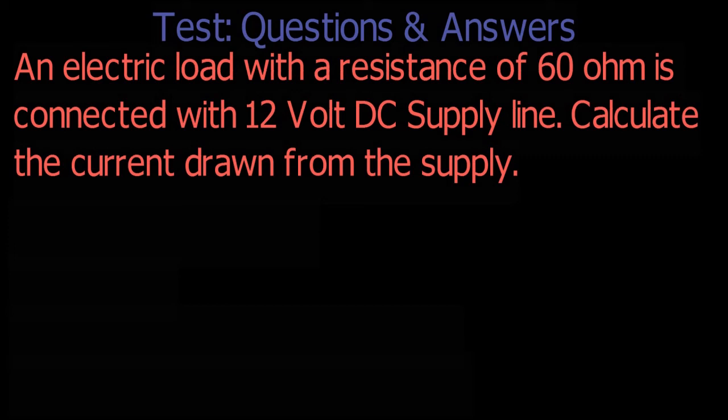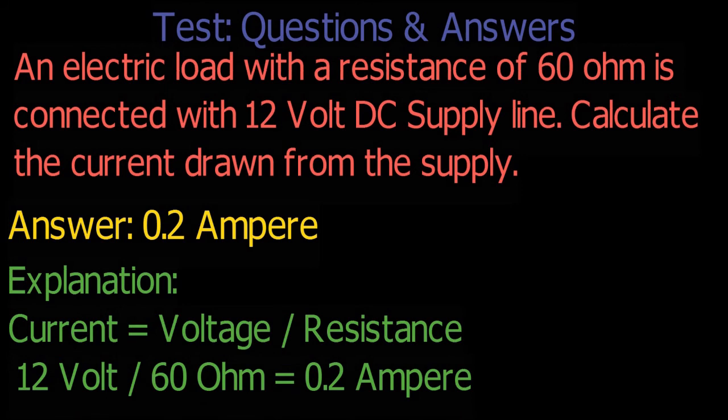The answer is 0.2 ampere. Explanation: As per Ohm's law, current equals voltage divided by resistance. So 12 volt divided by 60 ohm gives 0.2 ampere.